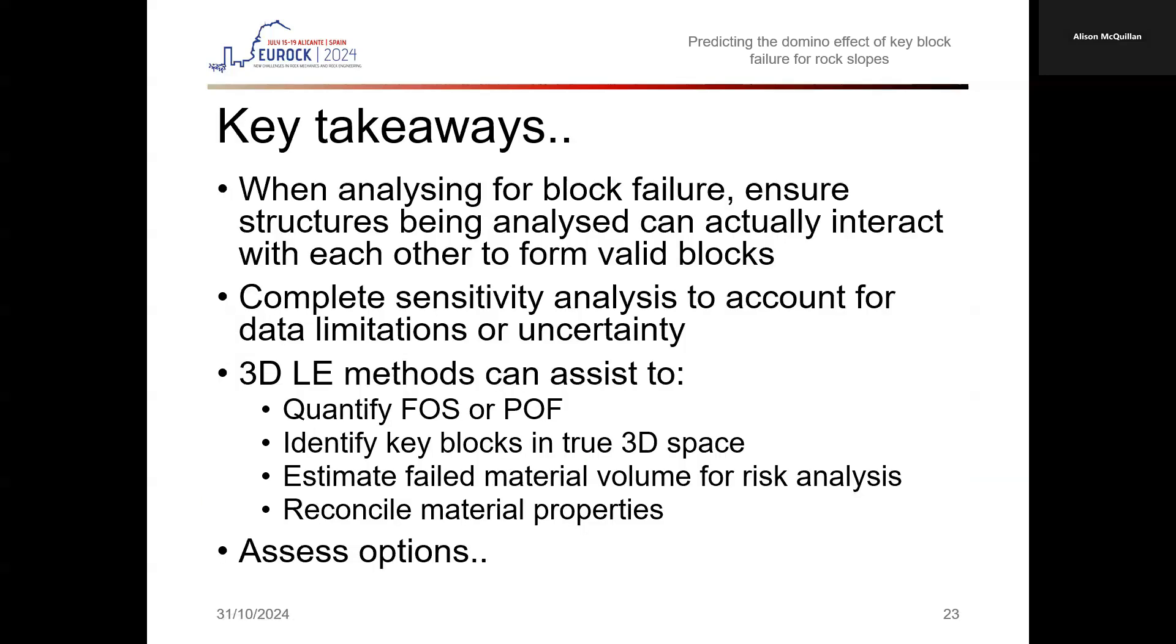To close, the key points of this paper and presentation include: when analyzing for block failure, ensure structures being analyzed can actually interact with each other to form valid blocks. Complete sensitivity analysis to account for data limitations or uncertainty. Using the same information we currently have available to complete our stereo net analyses, we can also complete a 3D limit equilibrium analysis. 3D limit equilibrium analysis can assist to quantify a factor of safety or probability of failure, which is not readily calculated in stereo net analysis. Identify key blocks in true 3D space to determine potential domino effects or unraveling effects. Identify the potential for slope unraveling should key blocks fail. Estimate found material volume for risk analysis and always assess options. That is, look at the scenario with multiple analysis methods to ensure a robust geotechnical review.